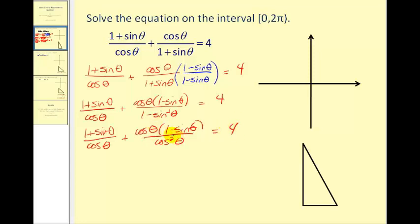And now this second fraction simplifies as a common factor of cosine theta. So this simplifies out. This will be to the first power. And now notice that we have two fractions with a common denominator. So we can go ahead and add these two fractions together.